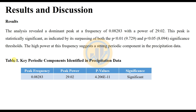This peak is statistically significant, as indicated by its surpassing of both the P less than 0.01 threshold at 9.729 and the P less than 0.05 threshold at 8.094. The significance of the power at this frequency suggests a strong periodic component in the precipitation pattern data. In table format for publication: peak frequency value 0.08283, power of peak value 29.20, P value 0.00 — significance: significant.